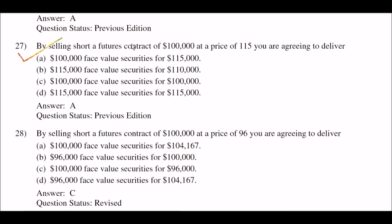Next question: by selling short a futures contract on financial instruments at a price of 115, you are agreeing to deliver. After solving this question, you get the answer option A. If you have a problem with this question, comment and tell me about it and I will give you the solution.